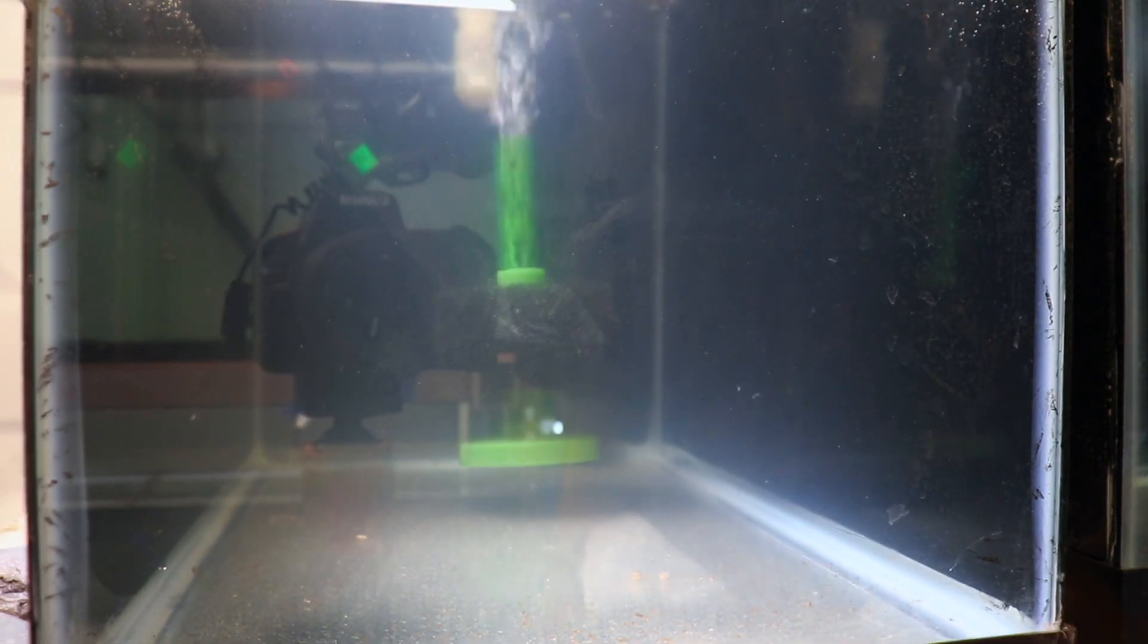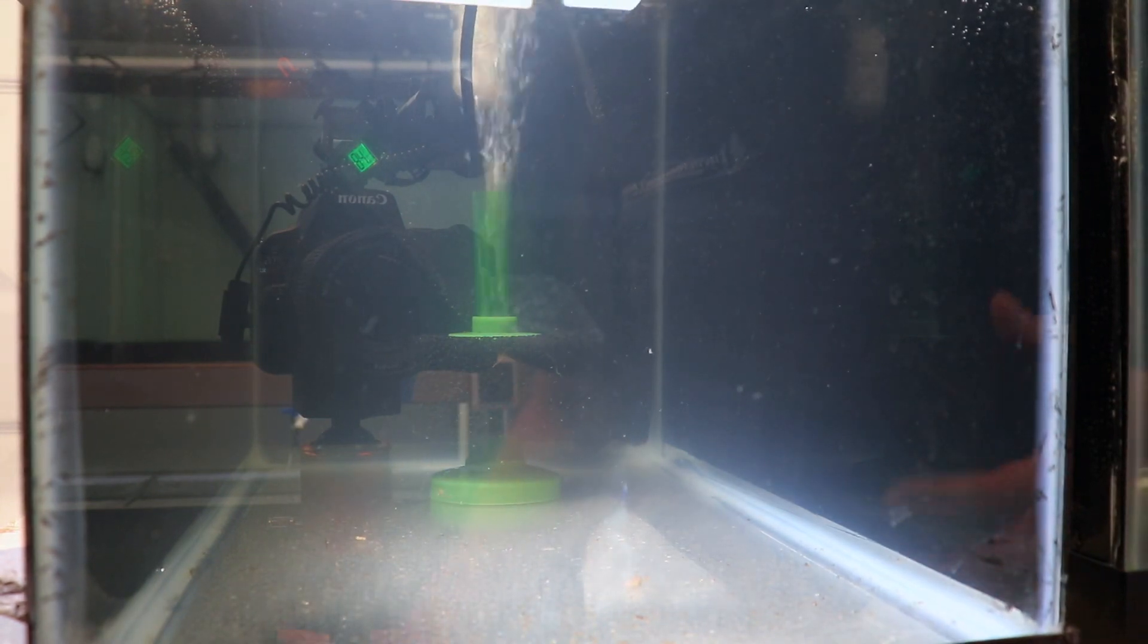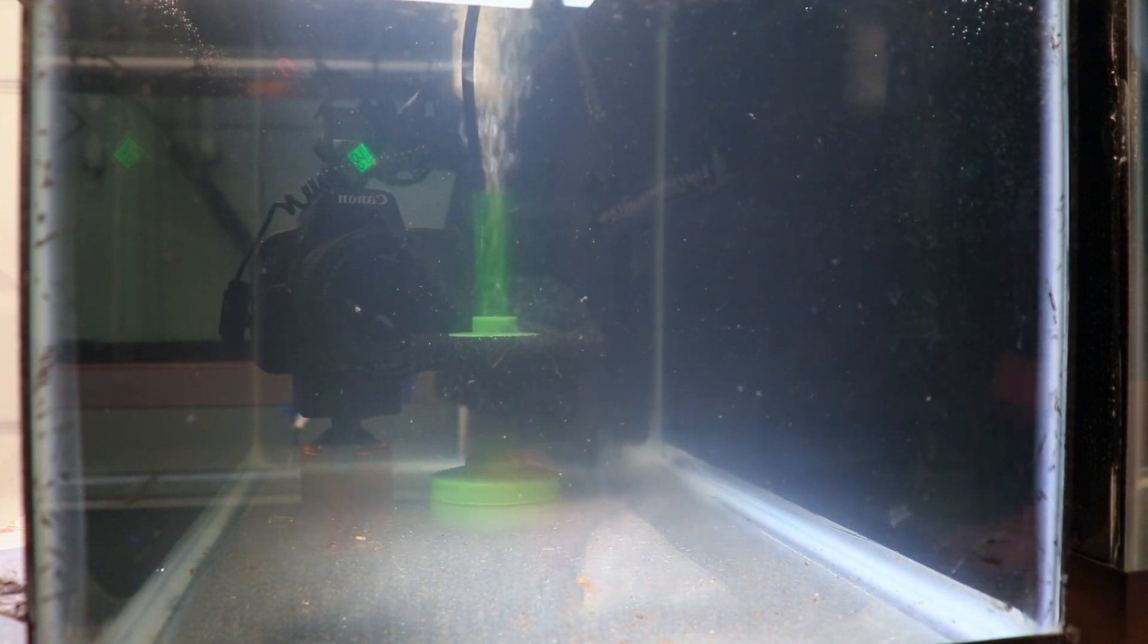So next to that, we have just a simple sponge filter in the tank. This is one of the Aquarium Co-op's core sponge filters. I want to say it's the small sponge filter, the one that's actually rated for 10 gallons. And since we're only keeping a pair of fish in here, that's about all we're going to really need for this tank.